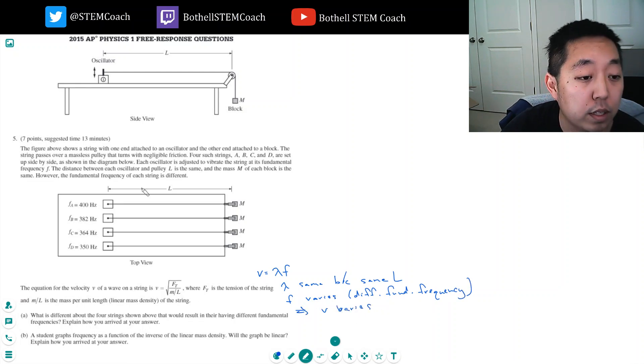That implies V varies. Like, V is different among the four strings. The velocity must be different. Because for F to be different and the lambda to be the same, V has to be different. So, V is different somehow. What aspect of V could be different? Well, in the square root of this equation, this square M over L. L is the same. FT is the same because the M is the same.